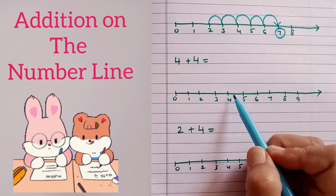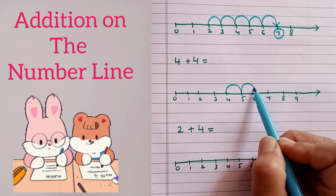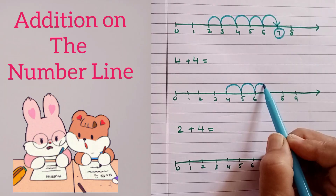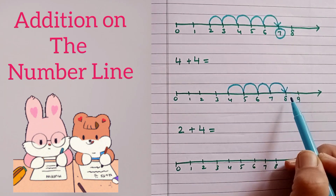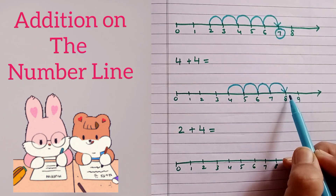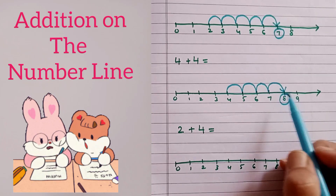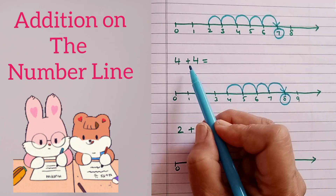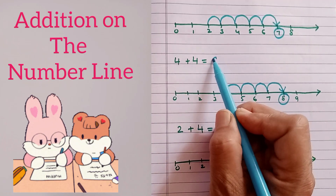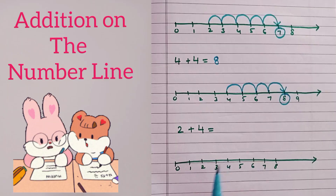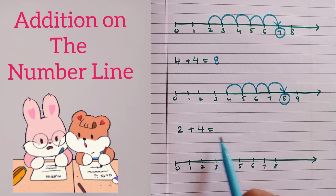Let's start with four — one, two, three, four. We have gone up four numbers and the answer is eight. So here we write four plus four is equal to eight.